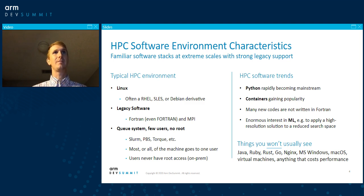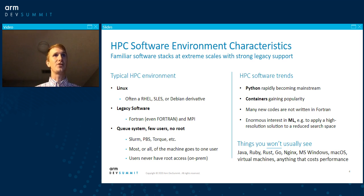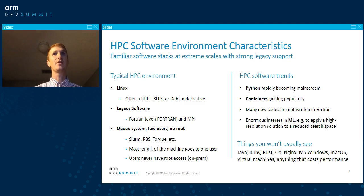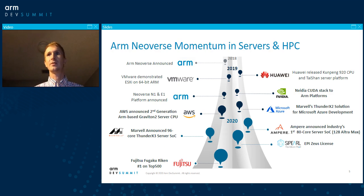Python is rapidly becoming a mainstream computing language for HPC. Generally, Python is used to tie together different low-level tuned kernels and math libraries, but it provides a high-level language to express the problem. Containers are also rapidly becoming a thing in HPC — research has made large strides in improving container efficiency and security, making them very attractive to HPC users. Things you generally won't see in HPC today include Java, Ruby, Rust — any language that emphasizes productivity over performance — because it's a high-performance computer.